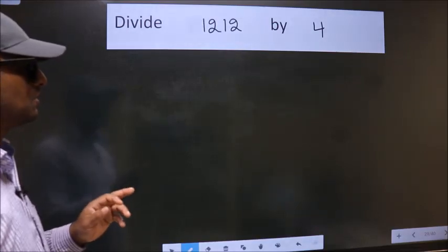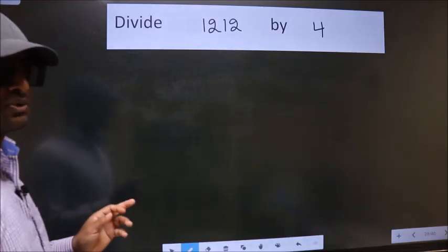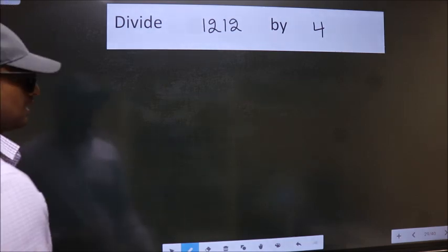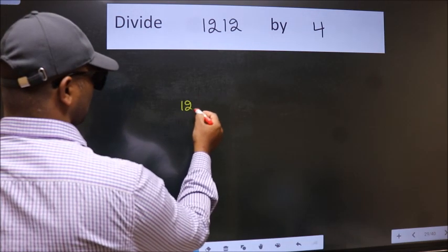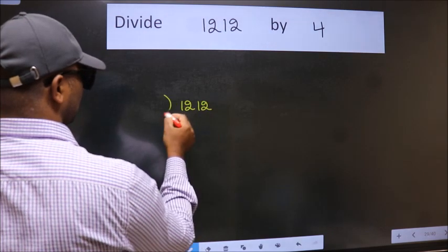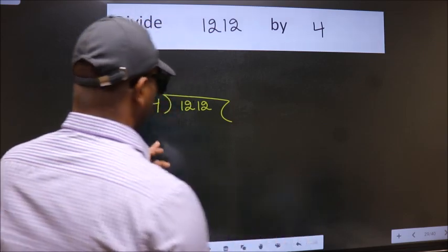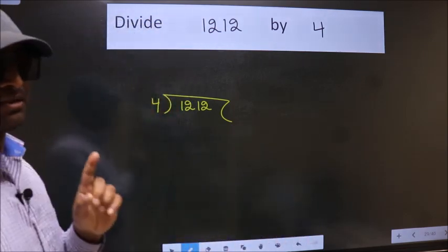Divide 1,212 by 4. To do this division we should frame it in this way. 1,212 here, 4 here. This is your step 1.